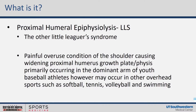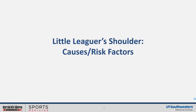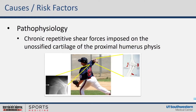The medical term is proximal humeral epiphysiolysis, or Little Leaguer's Shoulder Syndrome. Most people have heard of Little Leaguer's Elbow Syndrome. This is a painful overuse condition of the shoulder that causes widening of the growth plate at the proximal humeral growth plate. It occurs primarily in the dominant arm of baseball pitchers, but can occur in other overhead sports like softball, tennis, volleyball, and swimming.